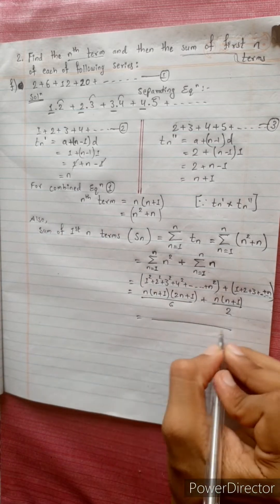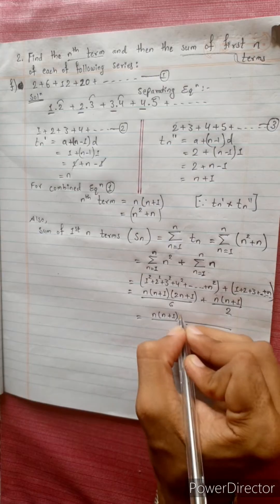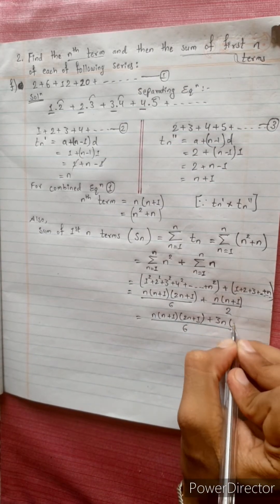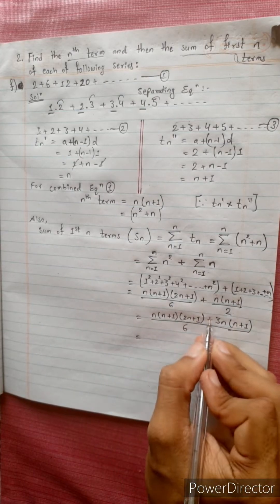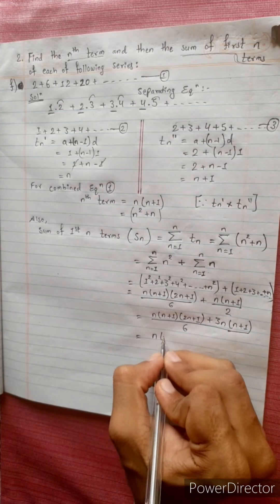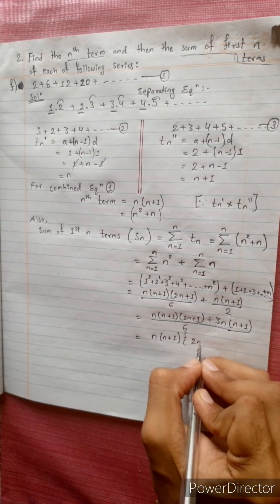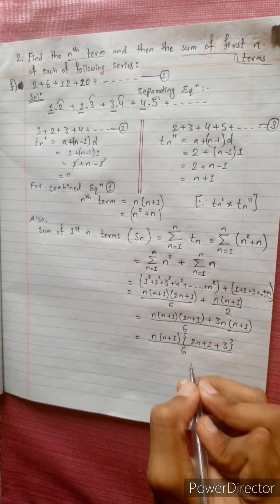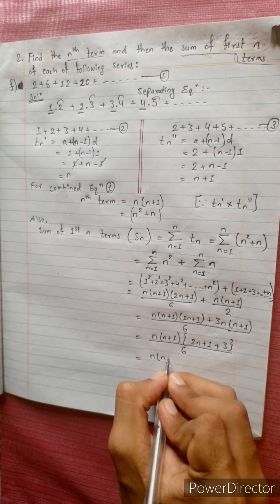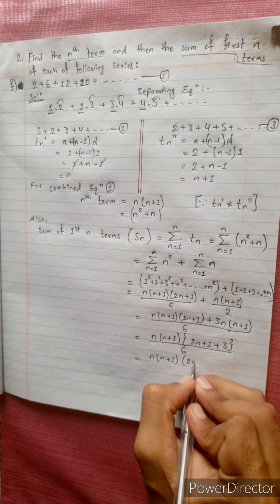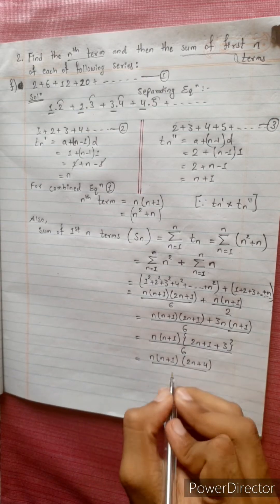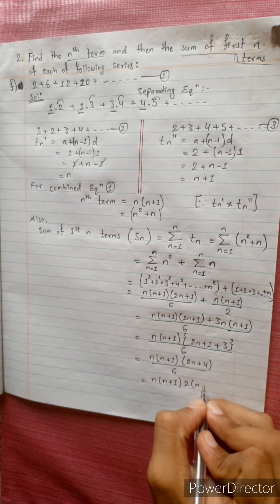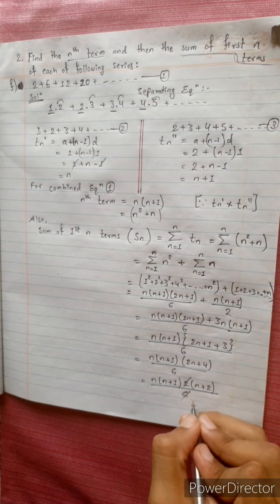Taking LCM as 6: n(n+1)(2n+1) divided by 6, plus n(n+1), simplifying to n(n+1) times (n+1 plus 3) divided by 6, equals n(n+1)(n+4) divided by 6. This simplifies to n(n+1)(n+2) divided by 6.